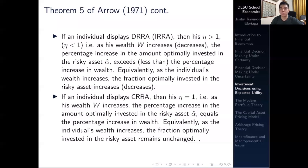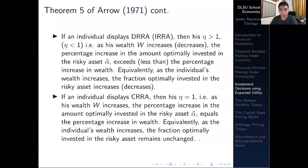Hi everyone and welcome to this video on security selection, which is a continuation of our lecture under the module of investment decisions using the expected utility criteria. To recap, in the last video we discussed the five theorems of Kenneth Arrow and we said that this has a lot of implication as to how we interpret the degree of risk aversion and its relationship to the amount that a consumer would be willing to invest in a risky prospect.